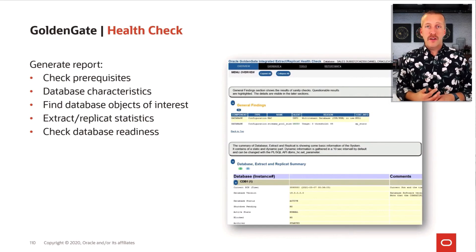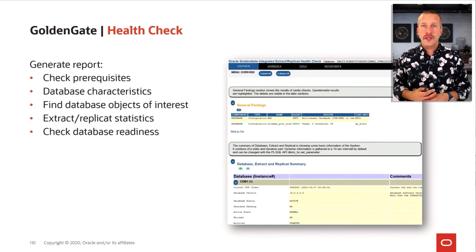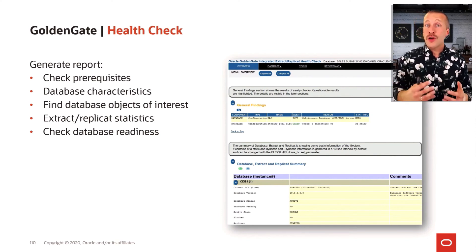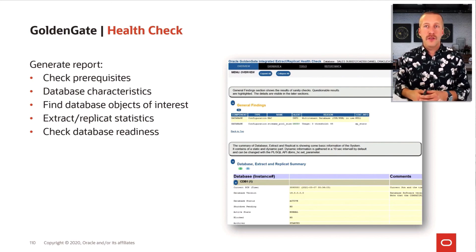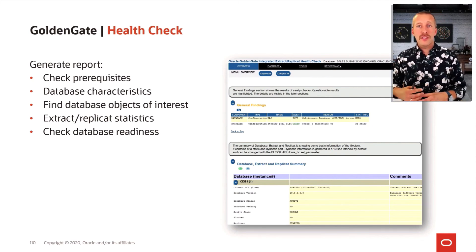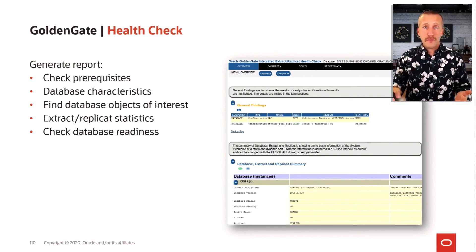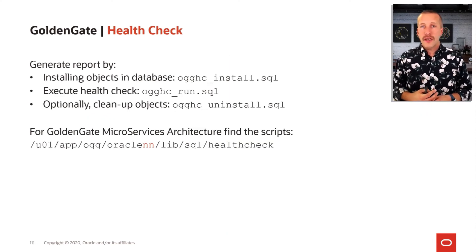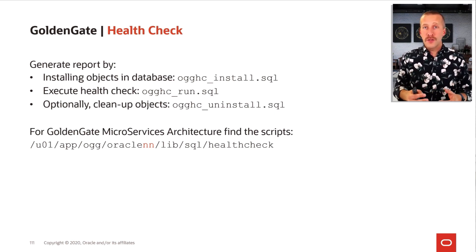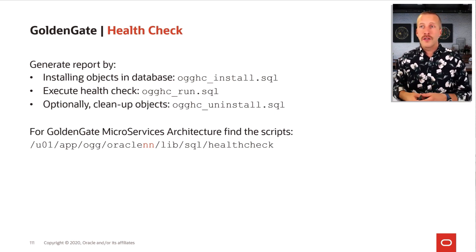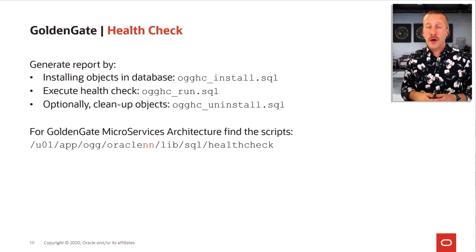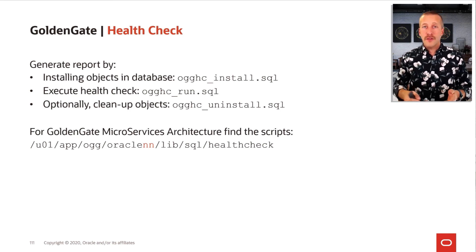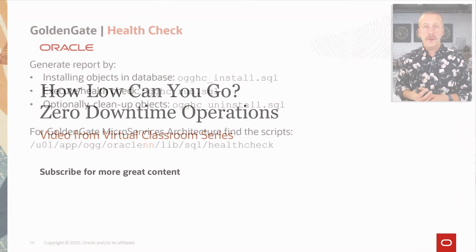Another good way to determine the readiness of the database is to use a Golden Gate health check. You can use it to get a sanity check of the database and ensure that key performance parameters are set at adequate values. You can also look at database characteristics and statistics of the extract and replication process, and overall get an idea of the database readiness. It's very easy to run — simply log on to the Golden Gate host, and in the file system there is a set of scripts depending on which database version you want to run it against. Run the script first to install some auxiliary objects, then run the health check, and after that remove those objects again. It gives you a very good idea of how that database will work with Oracle Golden Gate.